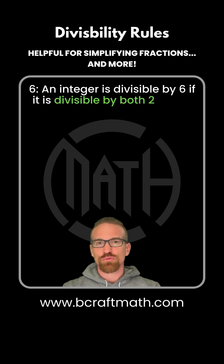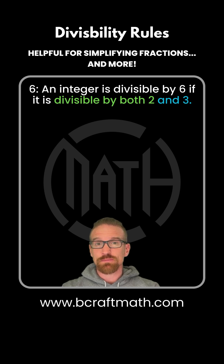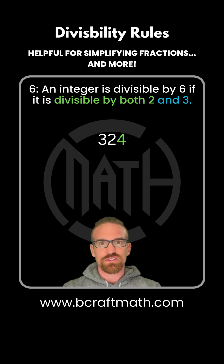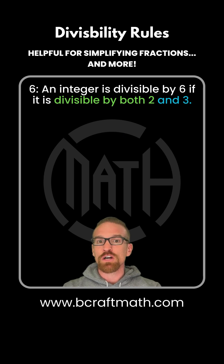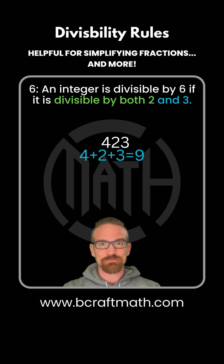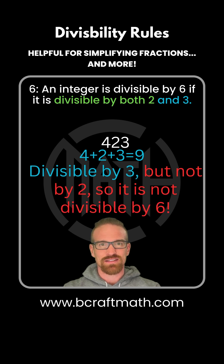Now let me jump to the rule for six. If the number is even — meaning it's divisible by two — and if the number is also divisible by three, then the number is divisible by six. Take 324 again: it ends in four, so it's divisible by two, and we just said it's divisible by three, which makes it divisible by six. But take 423: four plus two plus three is nine, so it's divisible by three, but since it's not even, it's not divisible by two, which means it's not divisible by six.